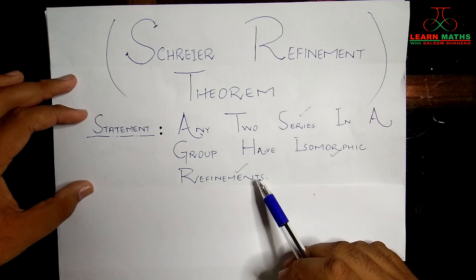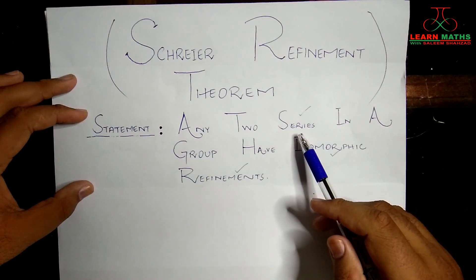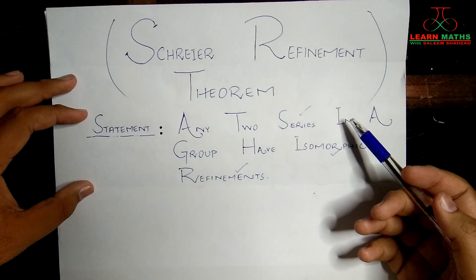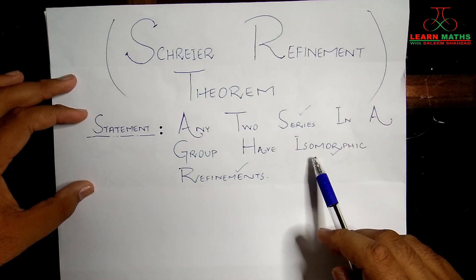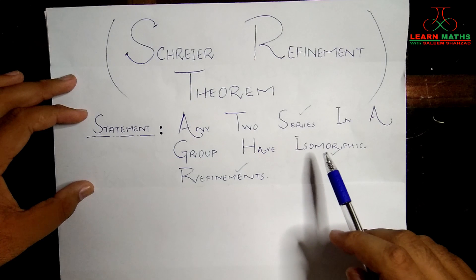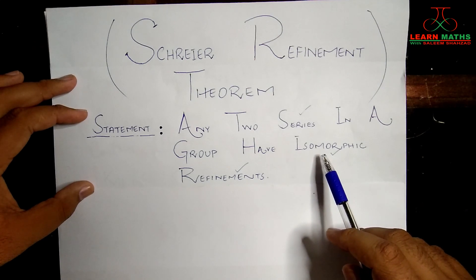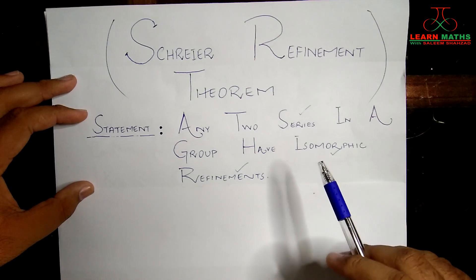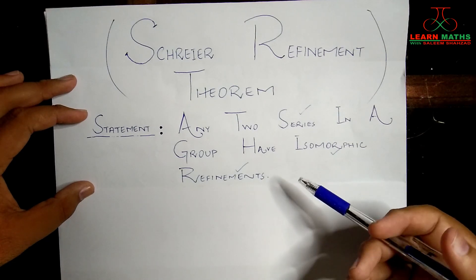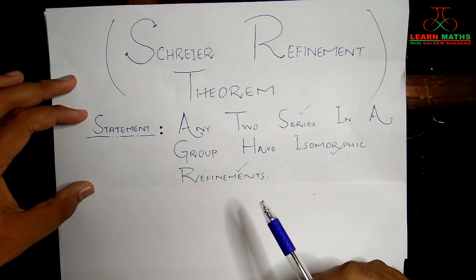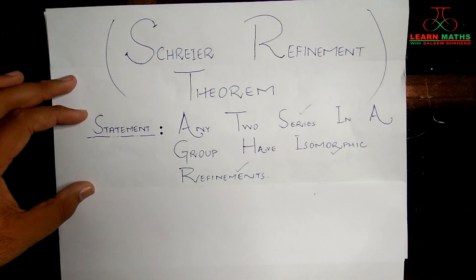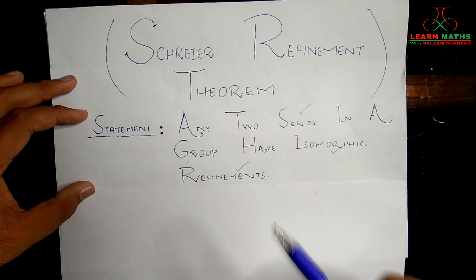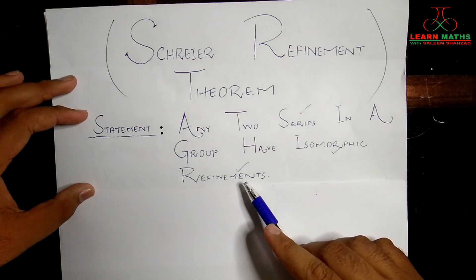Series refers to a normal series or a subnormal series. For isomorphic series, you should have the concept that two series are said to be isomorphic if their quotient groups are in one-to-one correspondence, and those factors which are in one-to-one correspondence should be isomorphic.